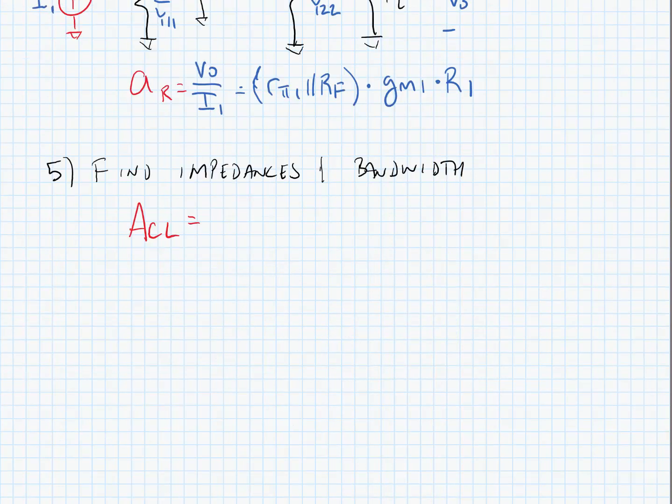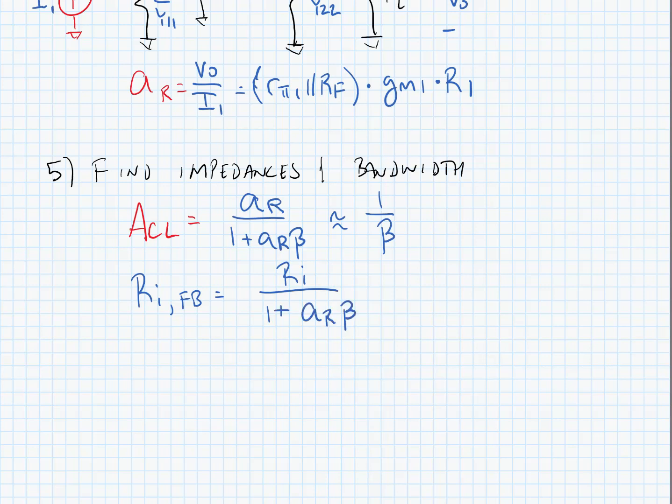Once we have this, we can find the closed-loop gain and our impedances and bandwidth. The closed-loop gain equals AR divided by 1 plus AR times beta, which is approximately 1 over beta. Input resistance with feedback equals input resistance without feedback divided by 1 plus AR times beta. Output resistance with feedback equals output resistance without feedback divided by 1 plus AR times beta. Bandwidth with feedback equals open-loop bandwidth times 1 plus AR times beta.